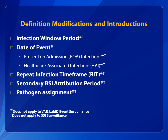The following topics are covered in this presentation: Infection Window Period; Date of Event to include POA and HAI; Repeat Infection Time Frame, or RIT; and Secondary Bloodstream Infection Attribution Period and Pathogen Assignment. These new approaches are intended to align criteria and definitions and decrease subjectivity while maintaining epidemiologic standardization and clinical relevance.